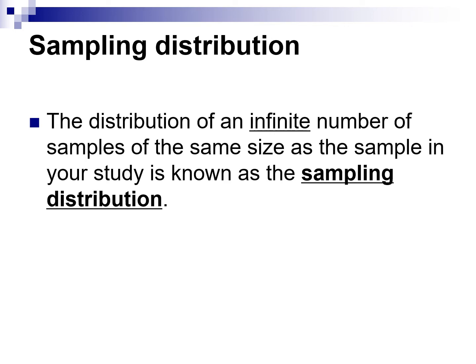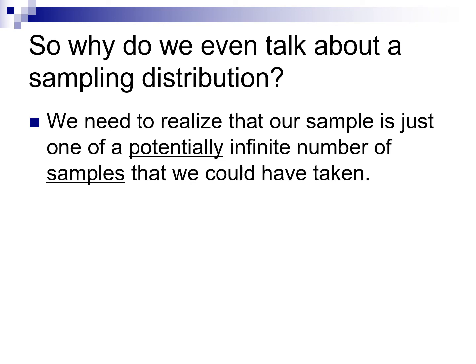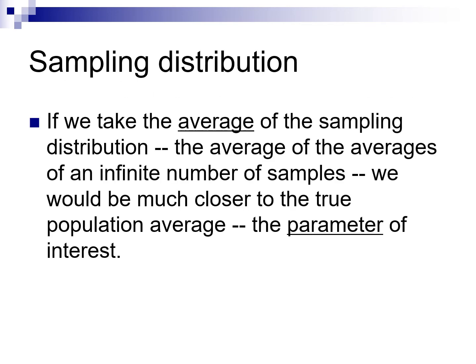The distribution of an infinite number of samples of the same size is known as the sampling distribution. We recognize that taking a sample doesn't tell us the exact true measure of the population, and mistakes can be made — we want to estimate what that error could be. If we take the average of all those sampling distributions — the average of the averages of an infinite number of samples — we get much closer to the true population average. Each sample of, say, 10 people has an average, and by repeatedly averaging, we converge on the real number.